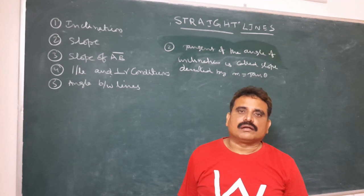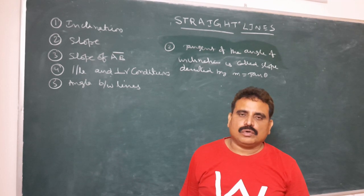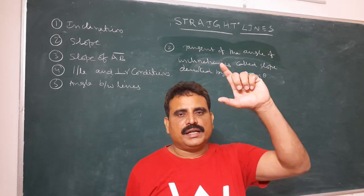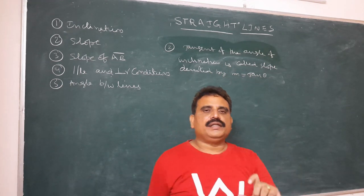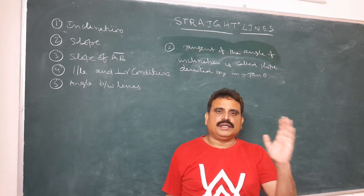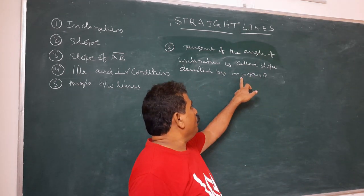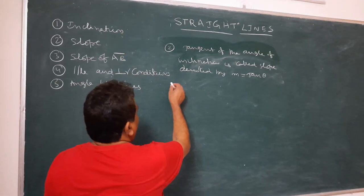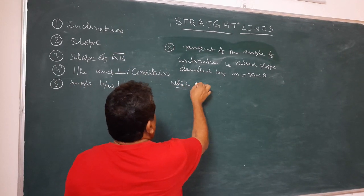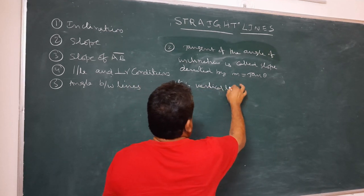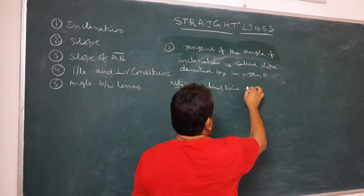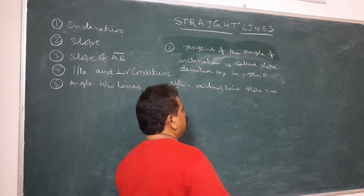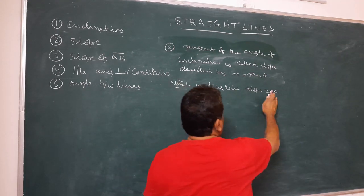The y-axis has inclination 90°, and tan 90° is infinity, which is not a real number. Therefore, any vertical line's slope is not defined. For a vertical line, slope equals infinity (inclination 90°), because tan 90° is infinity.